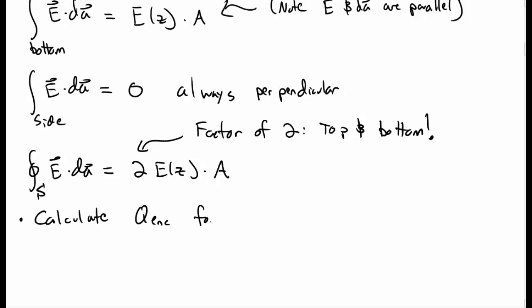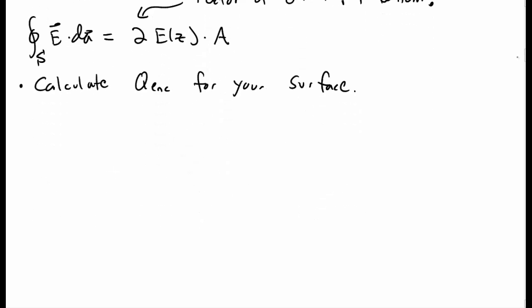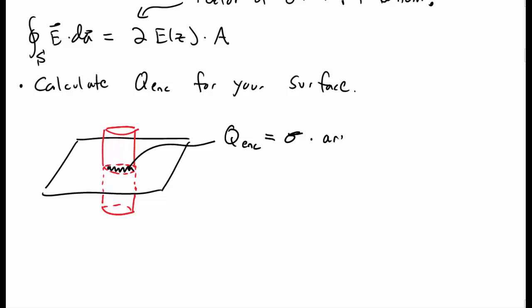Okay, the next step is to calculate Q enclosed for our surface. And so let's redraw our plane and one of our Gaussian surfaces. So let's choose the cylinder extending above and below the plane. And Q enclosed is this little bit of charge enclosed by our surface here along the plane. So Q enclosed here is sigma times the area of that little bit. And so here that's just sigma times the cross-sectional area A of our cylinder.